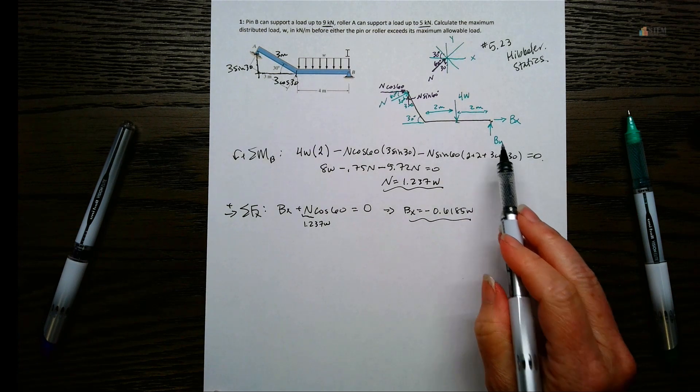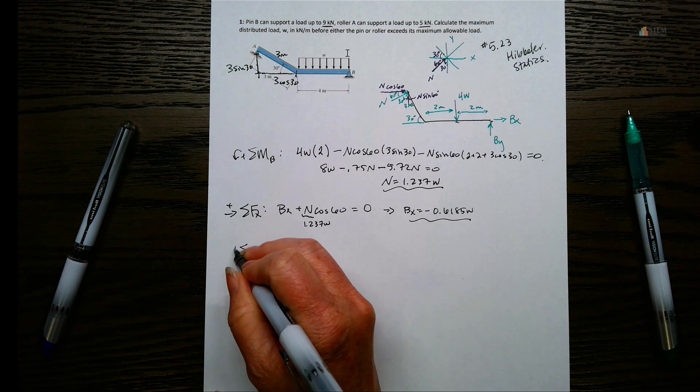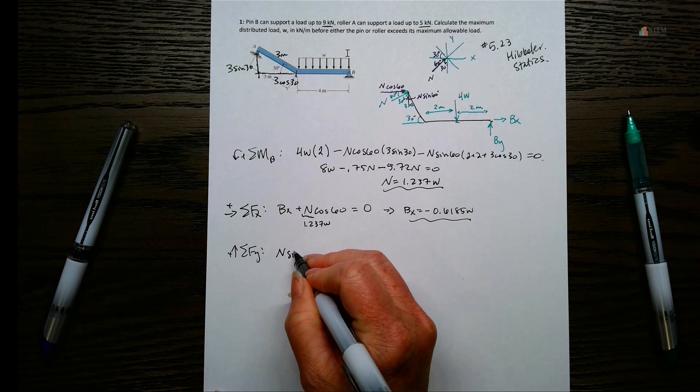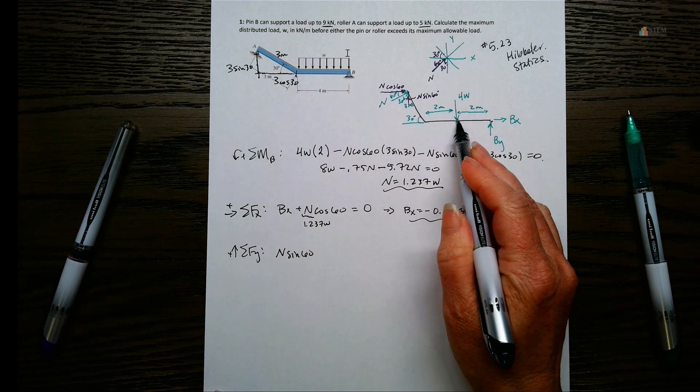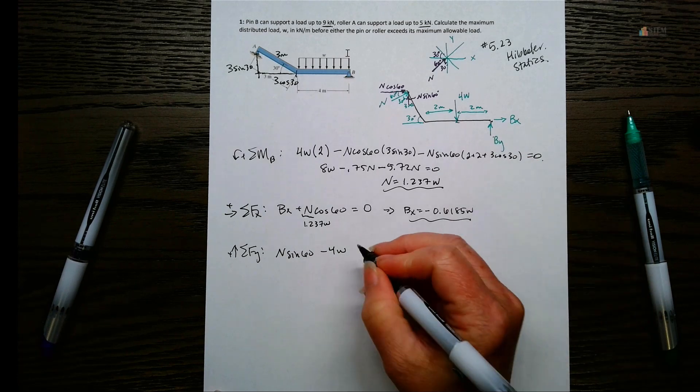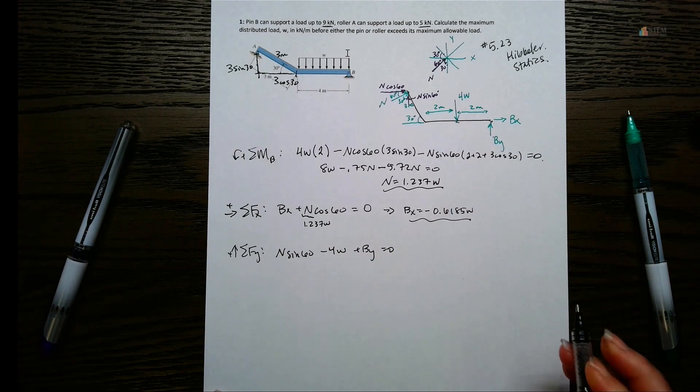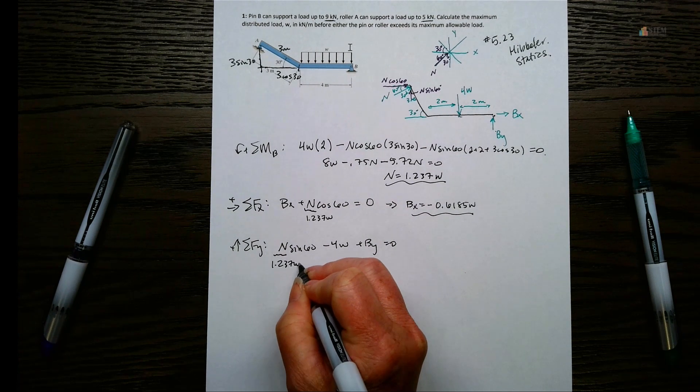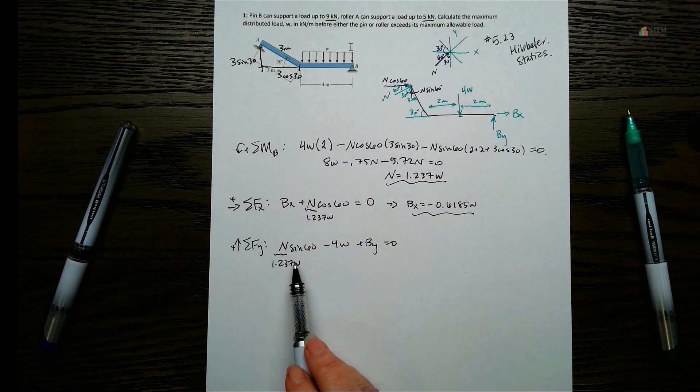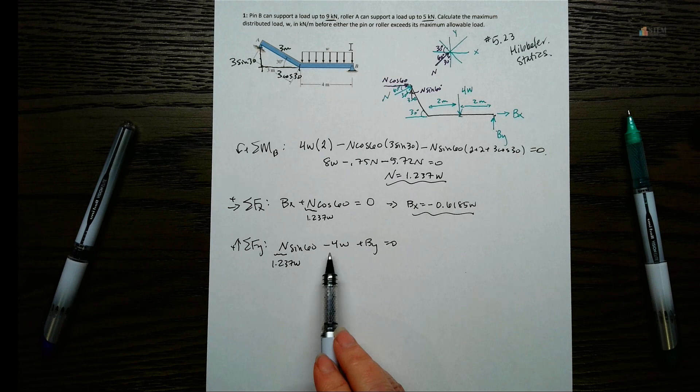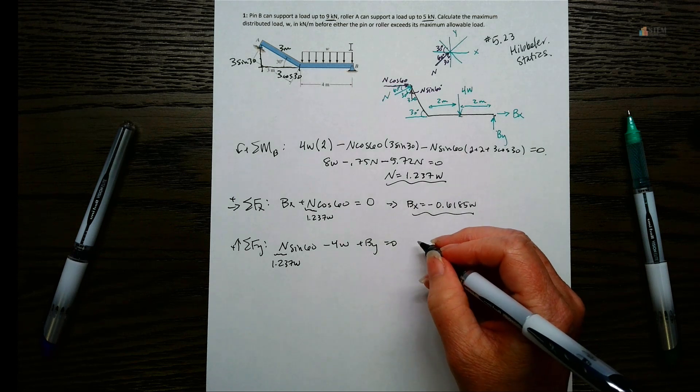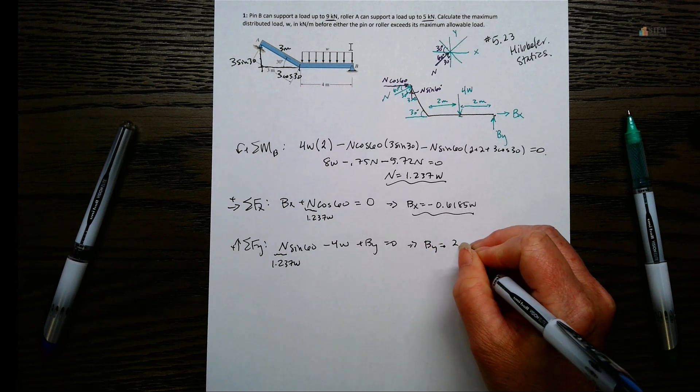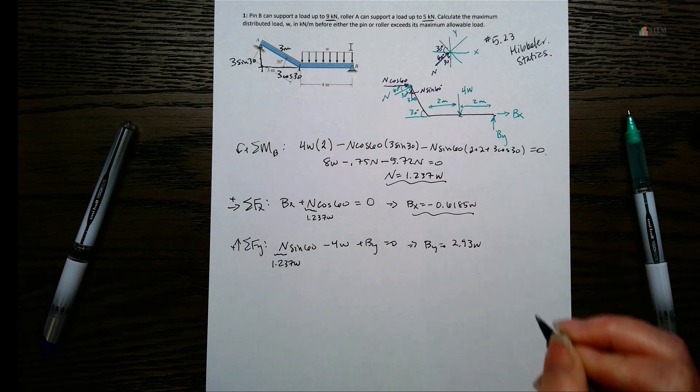And then we have one more unknown, which is BY. So let's go ahead and do sum of the forces in the Y direction. We're going to have N sine 60 from here. Minus 4W. And then plus BY. Equals zero. And then you probably guessed it. We're going to plug in the 1.237W for N. So both of these terms will have W. So we can go ahead and group up those terms and move them over to the other side. And we'll get that BY is 2.93W.